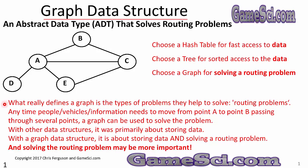What really defines a graph is the types of problems they help to solve — routing problems. Any time people, vehicles, or information needs to move from point A to point B, passing through several points, a graph can be used to solve the problem. With other data structures, it was primarily about storing data. With a graph, it is about storing data and solving a routing problem — and solving the routing problem may be more important.